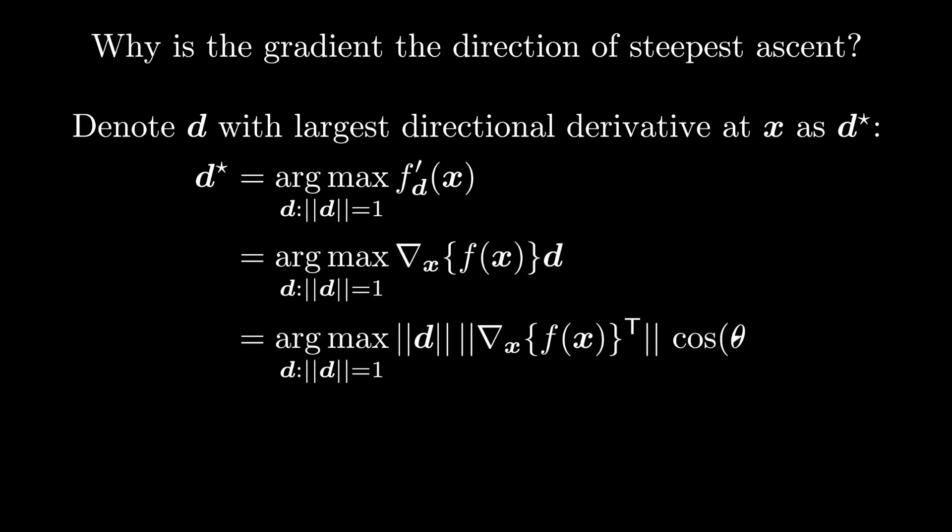Now we can write the inner product between two vectors as the product of their magnitudes and the cosine of the angle between them. So here that means we're maximizing the product of the magnitude of d, the magnitude of the gradient, and the cosine of the angle between the direction and the gradient.